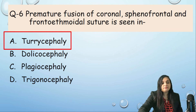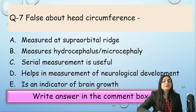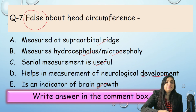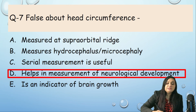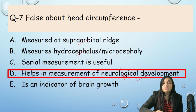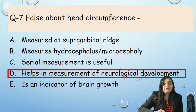False statement about head circumference: the false option is that it 'helps in measurement of neurological development' — this is wrong. The correct statements are: it is measured at the supra-orbital ridge, it can measure hydrocephalus and microcephaly, serial measurement is very useful, and it is an indicator of brain growth.